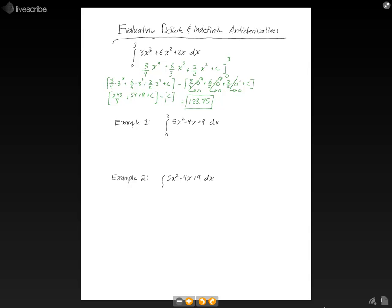And we're taking the indefinite integral of 5x squared minus 4x plus 9 dx. In order to do that, we will take our antiderivative, 5 thirds x to the third minus 4 over 2x squared plus 9x plus c. We'll put our bracket on, but we don't need a bracket for this one. And that is our indefinite antiderivative, also known as an indefinite integral.